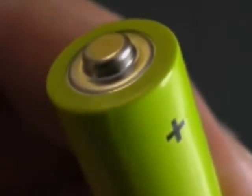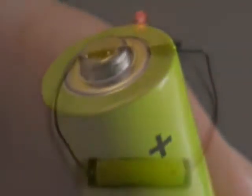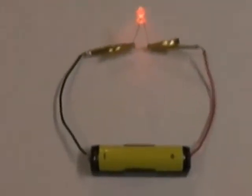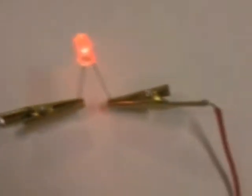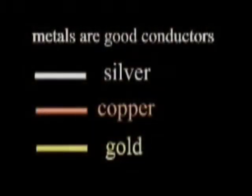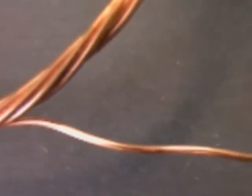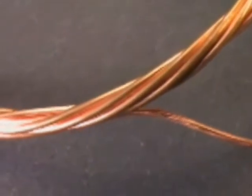Electrons will start to move from minus to plus if the right kind of material is connected to the battery. Materials that allow electricity to travel through them are called conductors. Most metals are good conductors of electricity. Copper is the most common metal used in wires.